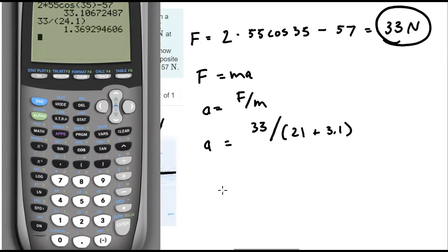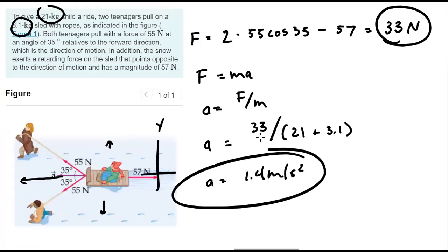And we get 1.4. We're going to keep that at two significant figures still, so 1.4 meters per second squared. So that is the acceleration of the sled and the child.